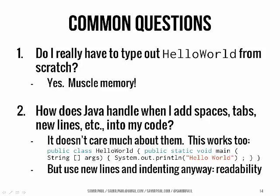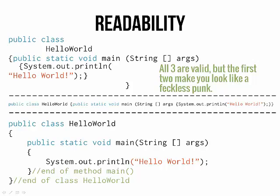Another question: how does Java handle when you add spaces or tabs or new lines into the code? The answer is nothing really changes — Java is mostly whitespace insensitive. The code chunk at the bottom is going to work too, but the problem is that code looks like garbage. You can see three different code examples — they're all the same specific statements, they'll all compile properly and run properly, but the first two make you look like a fool. It's just hard to understand and makes people question your intelligence and sanity. So it's really, really important that your code be clean and readable.